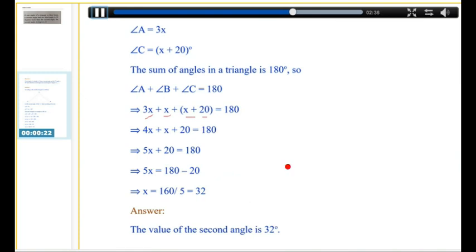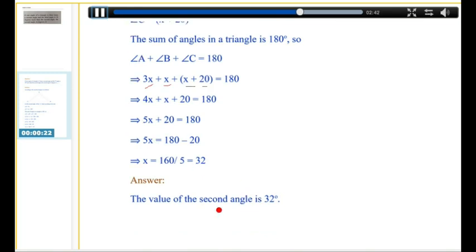Next, we subtract 20 from both sides, which gives us 5x is equal to 180 minus 20. That is, x is equal to 160 over 5 is equal to 32.